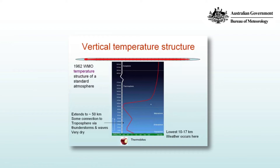Sitting above the tropopause is the stratosphere, and that extends to some 50 km. There's some connection to the troposphere via thunderstorms, which transfers a little bit of water vapour up into the stratosphere, but otherwise it's very dry, and there are atmospheric waves. Above that are other layers of the atmosphere that we'll be less interested in in a forecasting course: the mesosphere, and then the thermosphere. And once you get to the exosphere, you're really into free space.